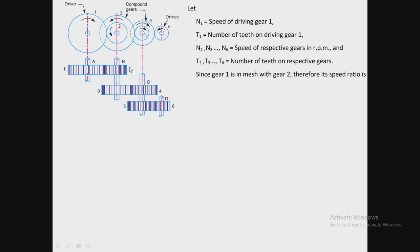Now we see the velocity ratio for this compound gear train. For that purpose we require some terms: let N1 be the speed of the driver, T1 the number of teeth on the driver, then N2, N3, N4, N5, and N6 are the speeds of the respective gears in RPM. Similarly, T2, T3, T4, T5, T6 are the number of teeth on the respective gears.